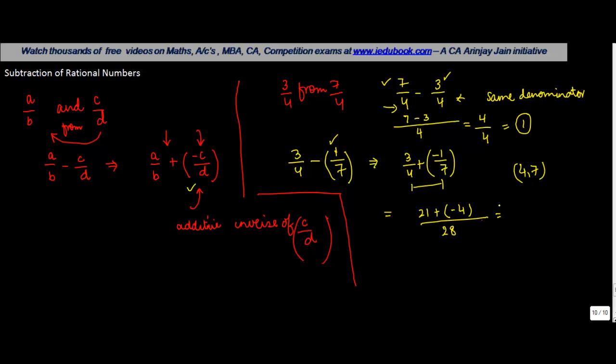Now, 21 plus minus 4 is 17 divided by 28. And hence, you've been able to do the subtraction by adding the additive inverse of a fraction.